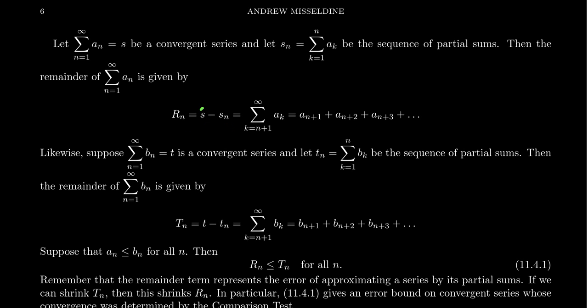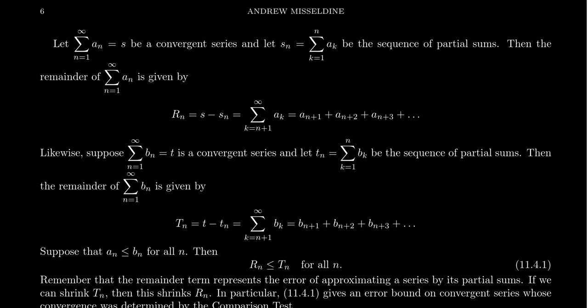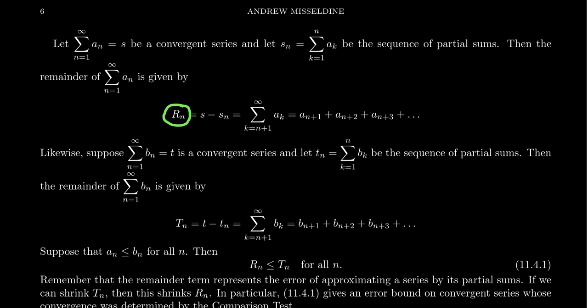Since the series is the sum of all infinitely many terms and the partial sum is just the sum of the first n terms, the remainder is just the tail starting at n plus 1 going towards infinity. We want that remainder to be small. But since the remainder itself is a series, we probably don't know exactly how big it is, so we need some type of estimate on the remainder to guarantee our partial sums are accurate.